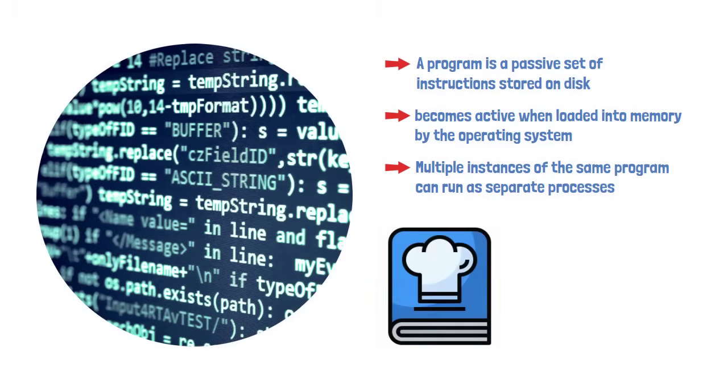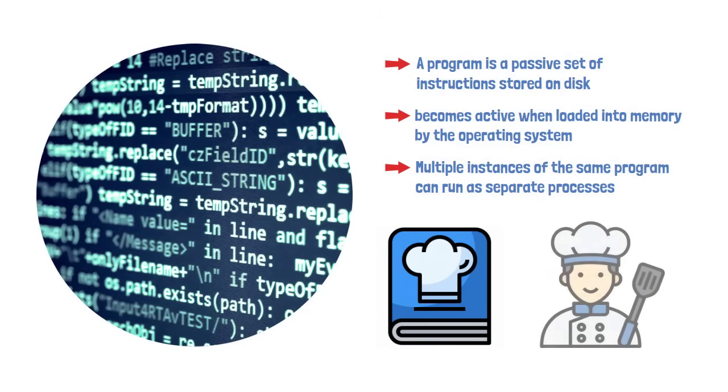It's like a recipe in a cookbook. Just words on paper until a chef, the OS, actually starts following those instructions to cook a meal. And just as multiple chefs can use copies of the same recipe to cook different meals simultaneously, multiple processes can run from the same program.